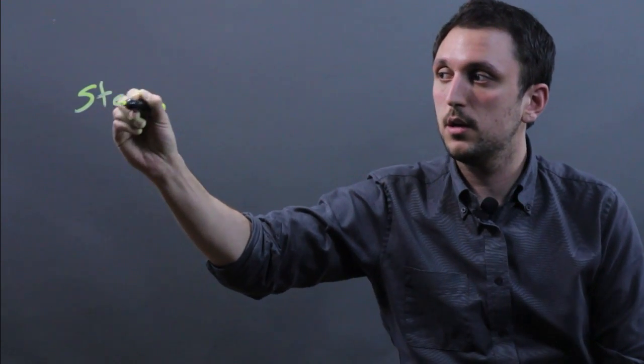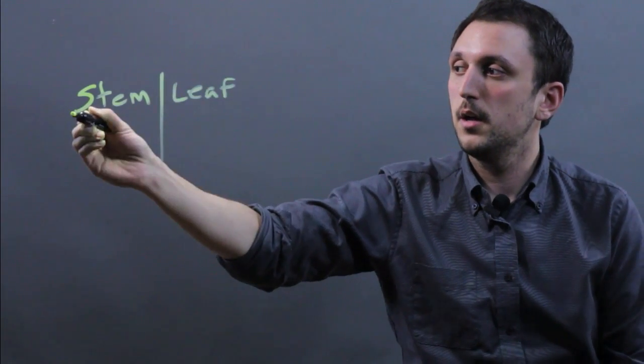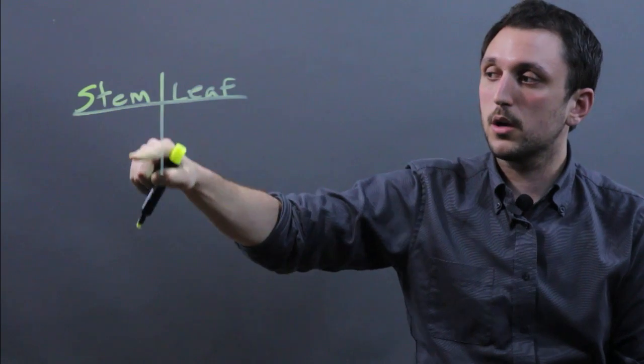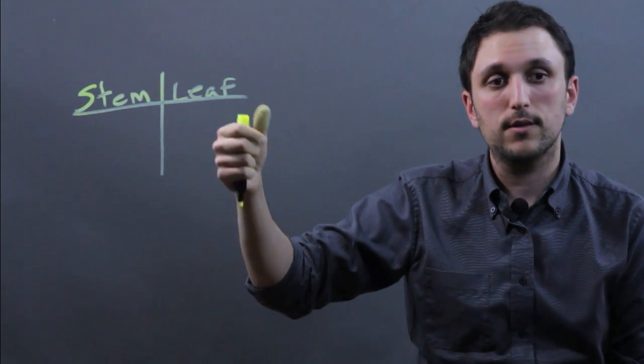First, you want to make your stem and leaf plot. So you write stem, leaf, and here we're only going to have one digit. The stem side of the plot always has a single digit.